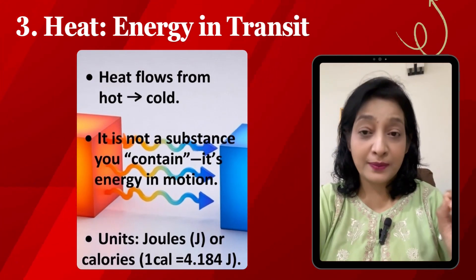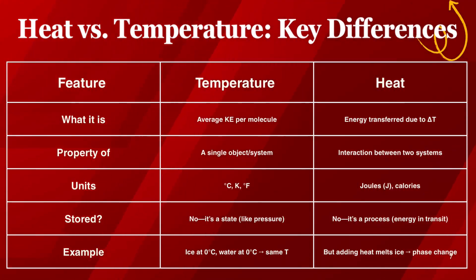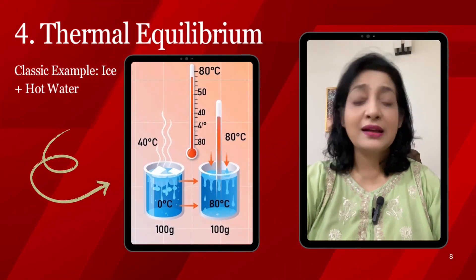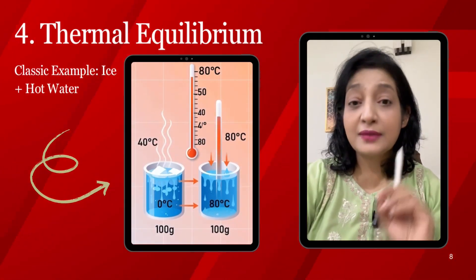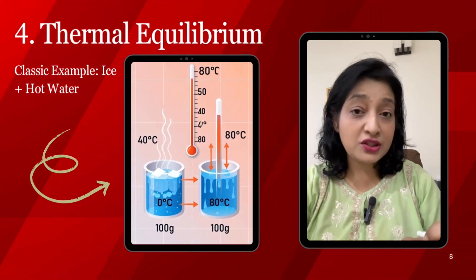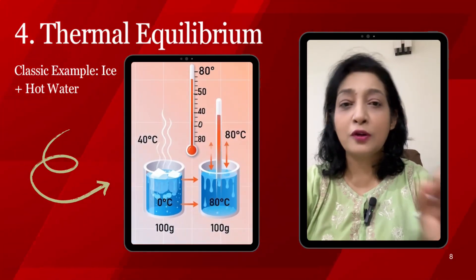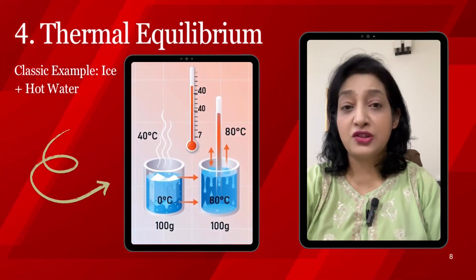A heat-versus-temperature comparison table is shown on screen. Here is a classic example: 100 grams of ice at 0°C plus 100 grams of water at 80°C gives a final temperature of 40°C after melting. The temperatures equalize, but heat flowed from the water to the ice — even though both end at the same temperature, heat was transferred.